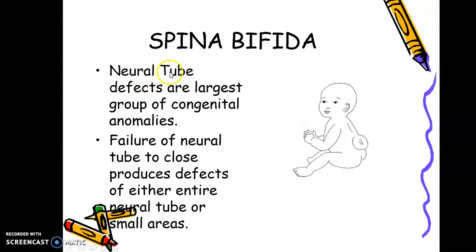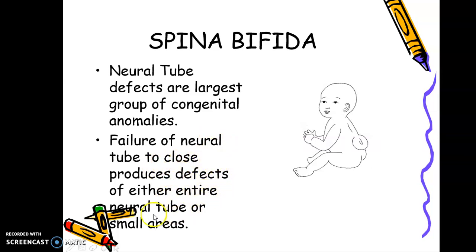Neural tube defects are the largest group of congenital anomalies. Failure of the neural tube to close produces defects of either the entire neural tube or small areas.